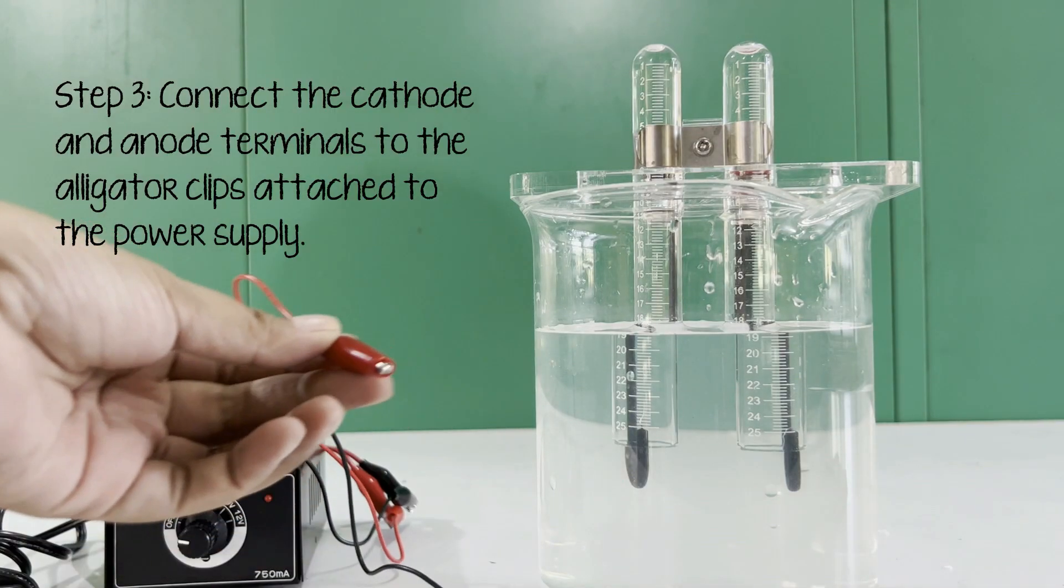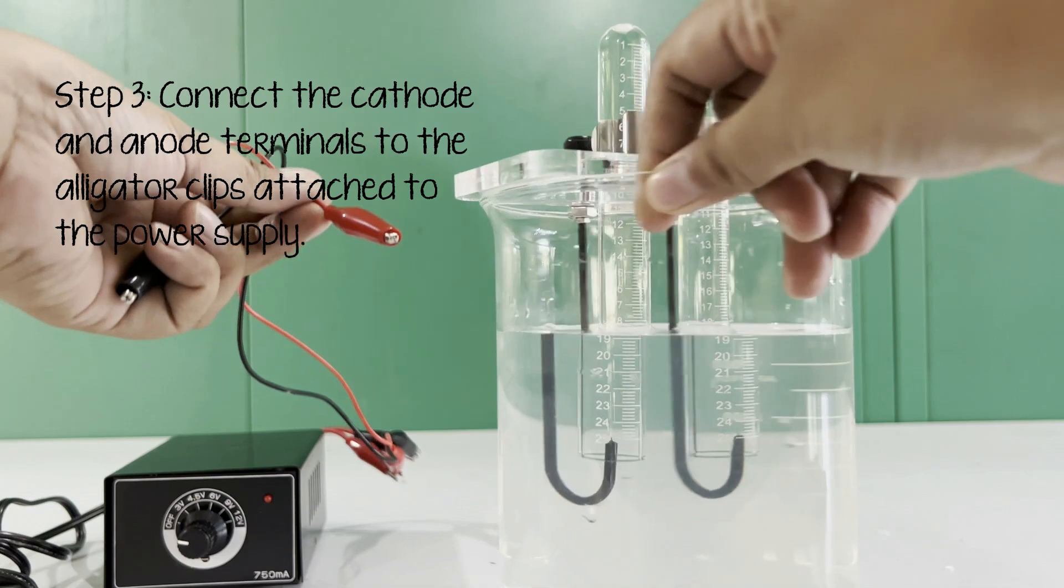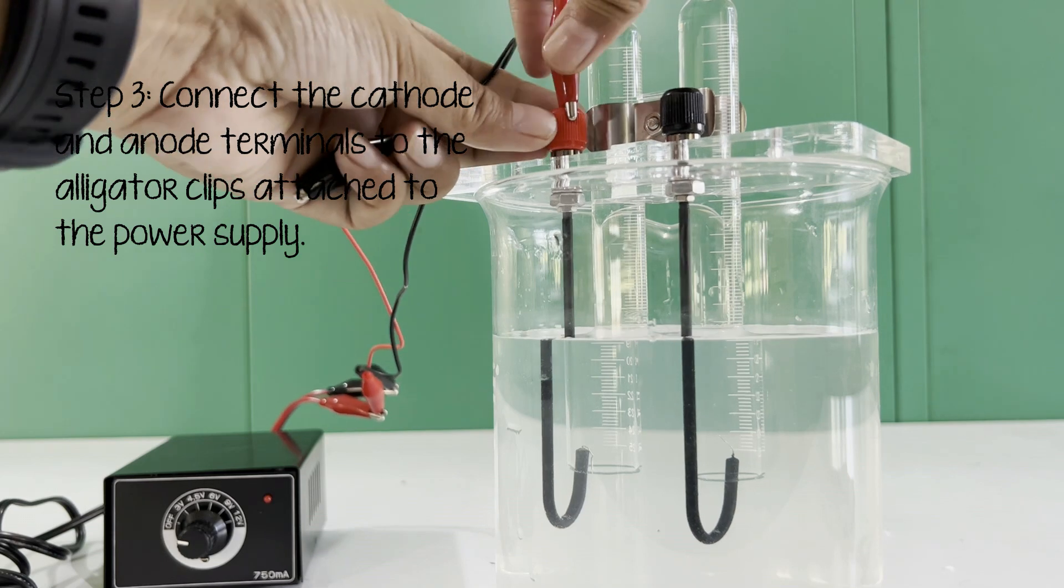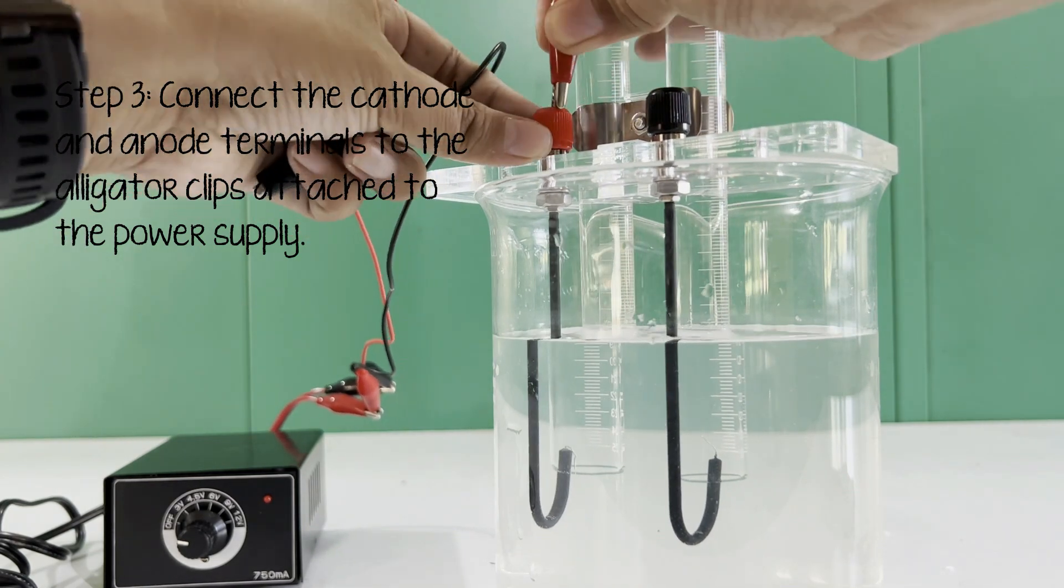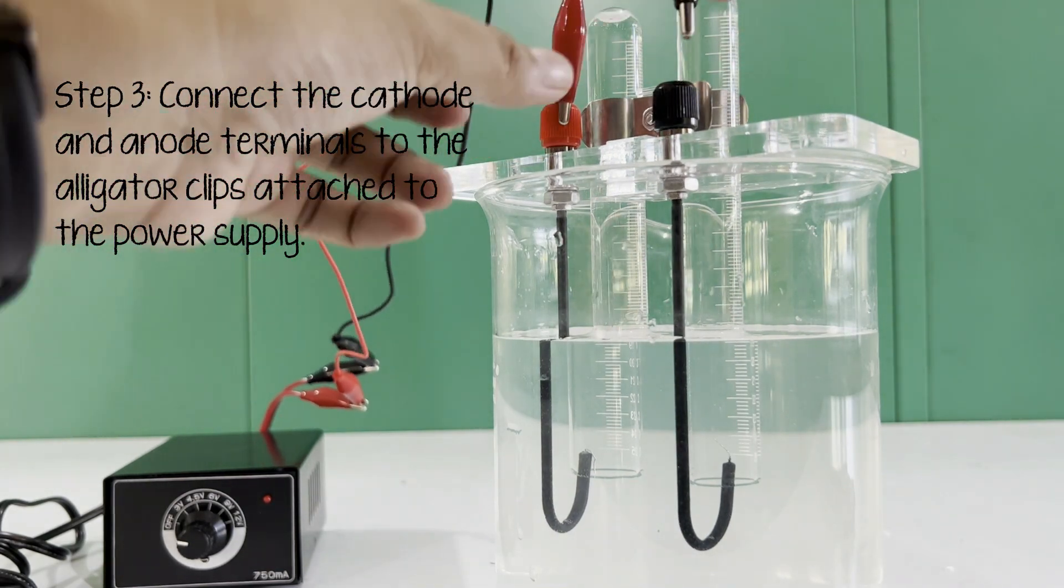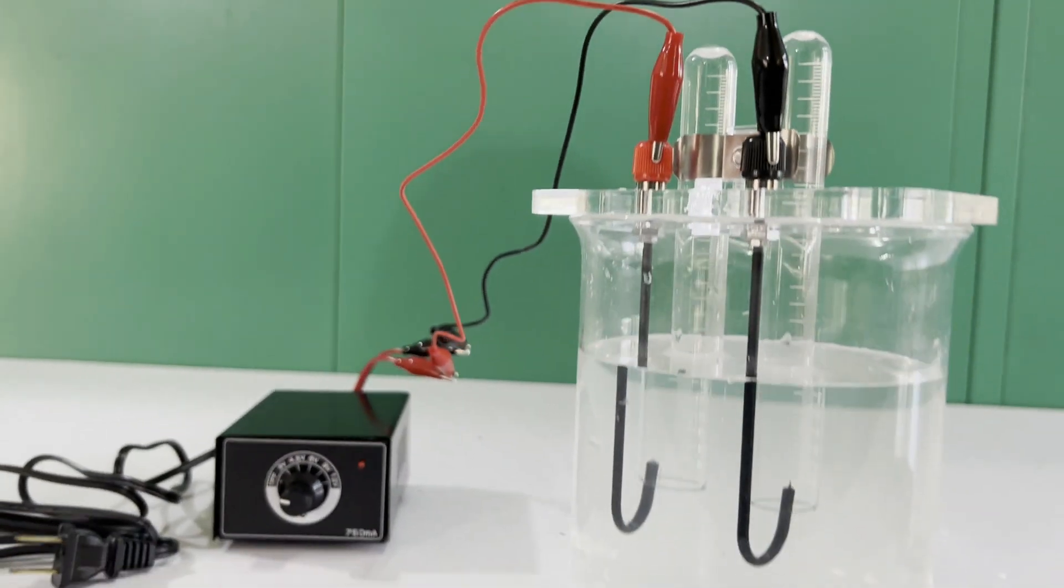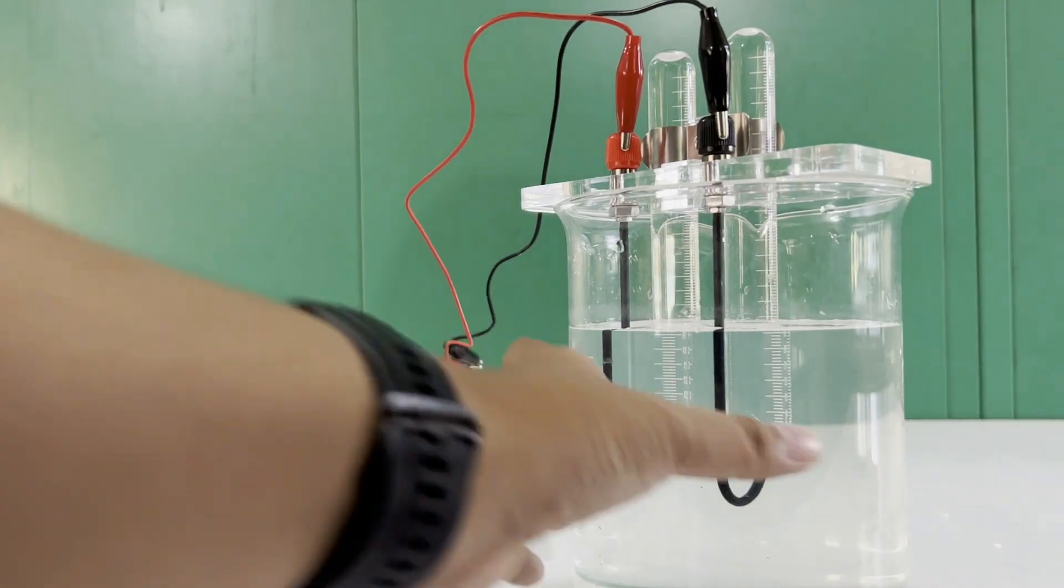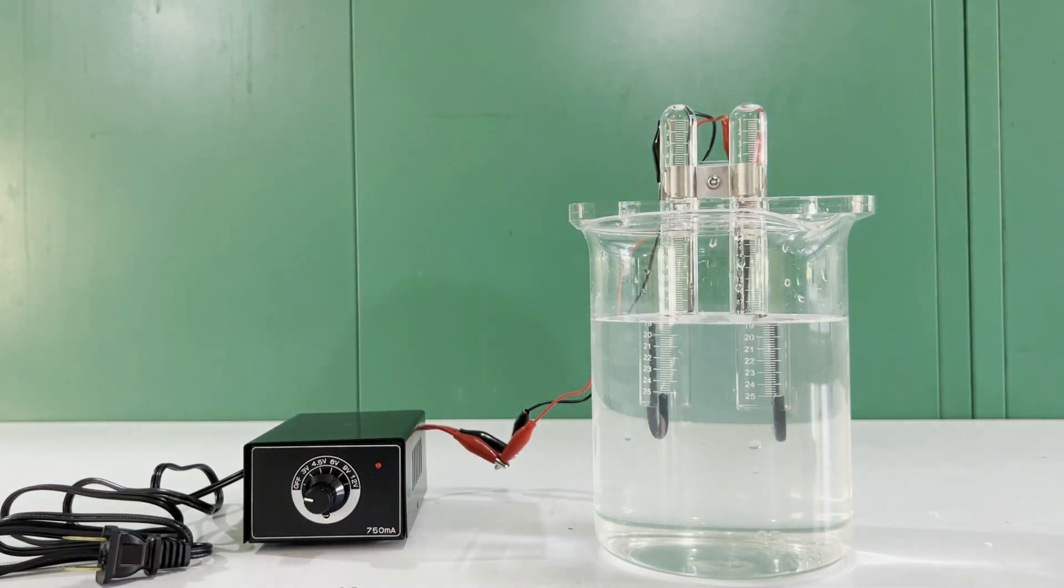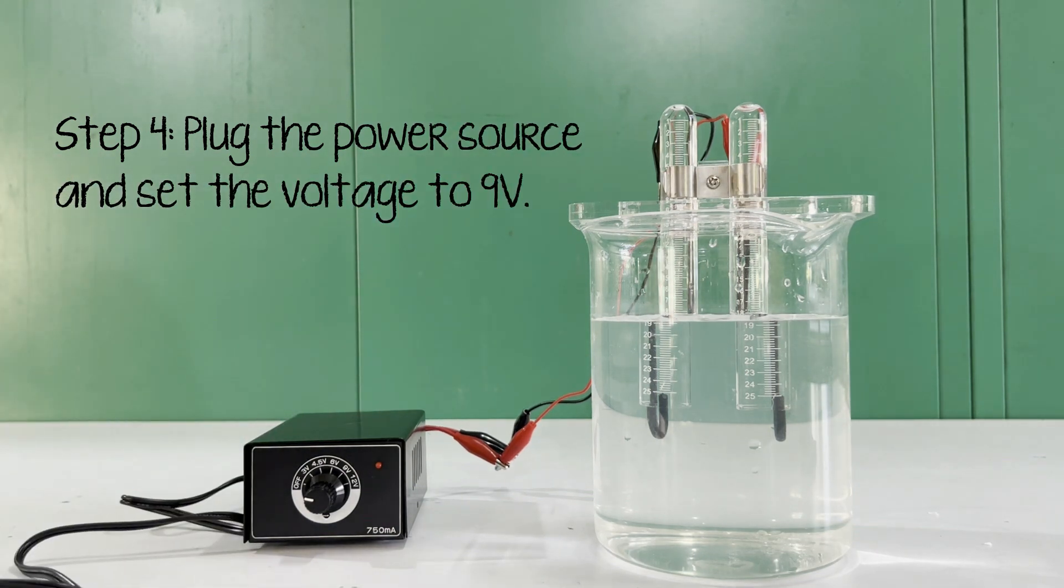Next, connect the cathode and anode terminals to the alligator clips attached to the power supply. Make sure that you are attaching to the correct colors. The cathode is the black terminal and is the negative electrode, while the red one is the anode and is the positive electrode. Plug the power source and set the voltage to 9V.